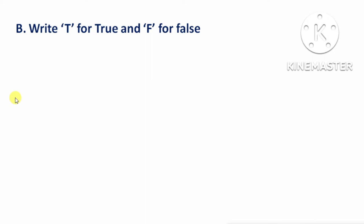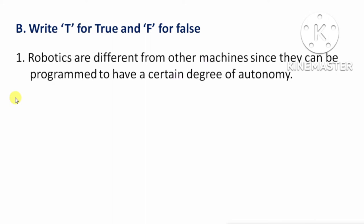True-False. First question: robotics are different from other machines since they can be programmed to have a certain degree of autonomy. Means, robotics अन्य मशीनों से अलग हैं क्योंकि इन्हें program किया जा सकता है और इनमें autonomy की क्षमता होती है। Answer: True.